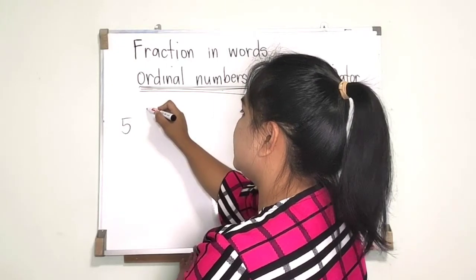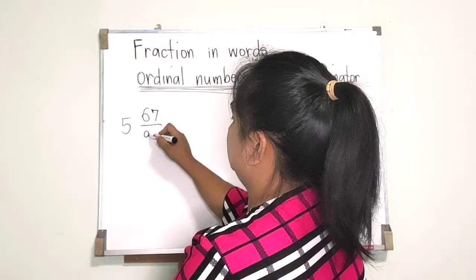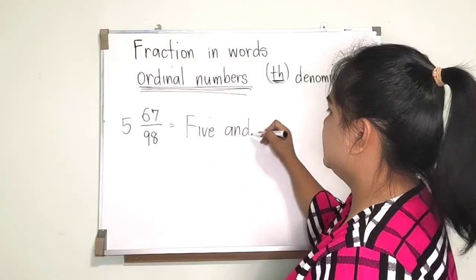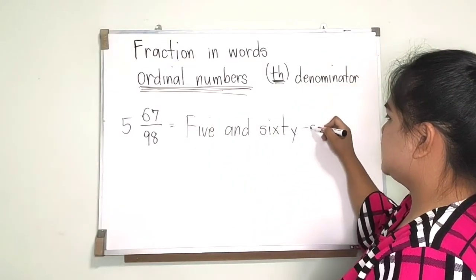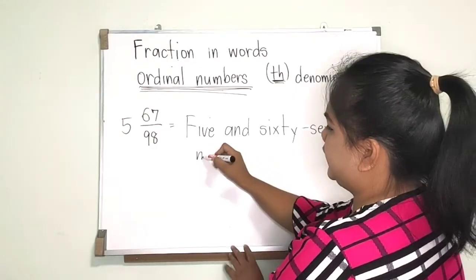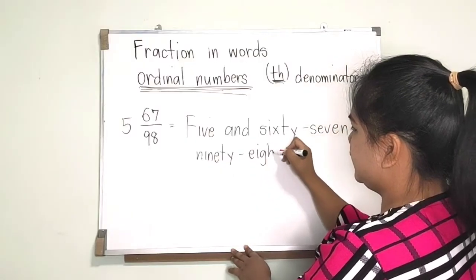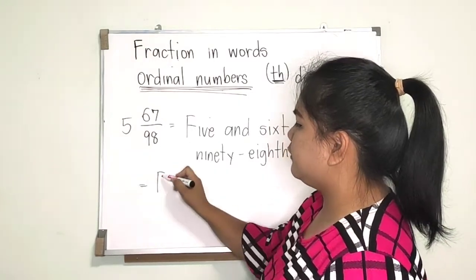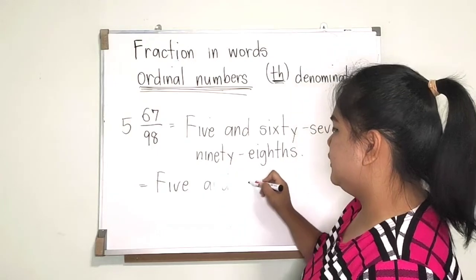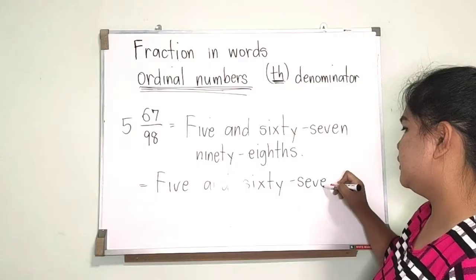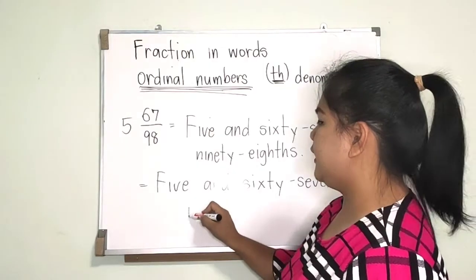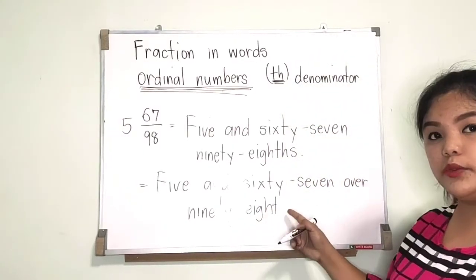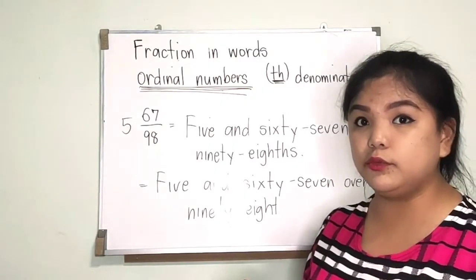For example, five and 67/98. The correct way is 'five and sixty-seven ninety-eighths.' But in my teaching, I will let students write 'five and sixty-seven over ninety-eight.' However, you cannot write 'over' and at the same time have TH here — that is definitely wrong.